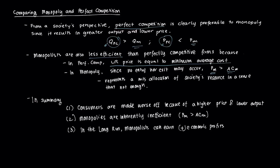As a summary, consumers under a monopoly are made worse off. The consumer surplus, which is a measure of consumer welfare, is much lower. Monopolies are inherently inefficient because, with no entry and exit, the price of a monopolist will always be greater than average cost. In the long run, the monopolist can certainly earn some positive economic profit, whereas perfectly competitive firms earn no abnormal profit.